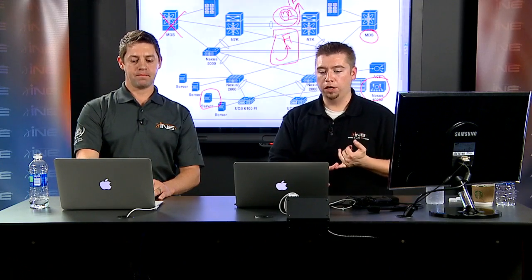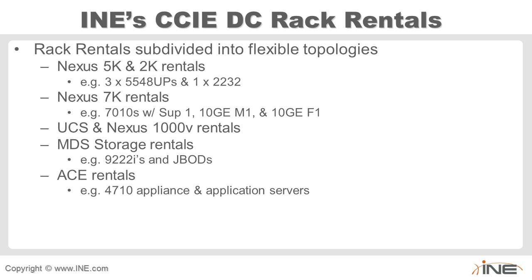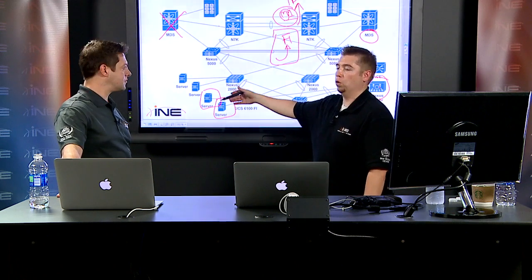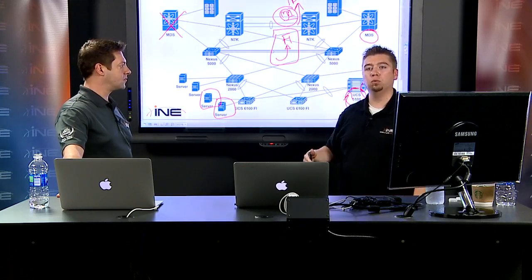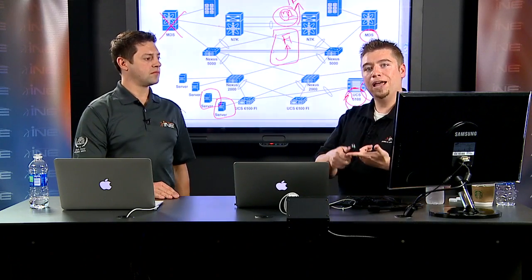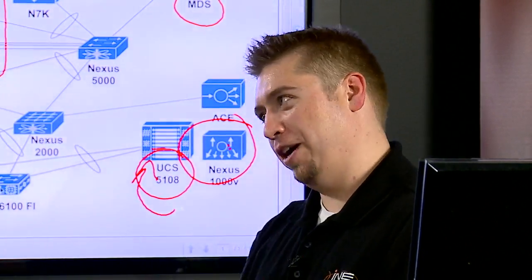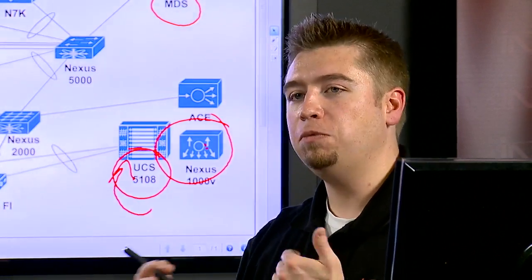Continuing with rack rentals: we have Nexus 2K, 5K, 7K, UCS chassis (meaning Nexus 1000v will be on there), storage platforms including storage switches and storage arrays, and application switching with ACE. For ACE, you need actual servers to test the end result, whether on a UCS chassis or standalone physical or virtual machines. For example, with Nexus TrustSec, you can't really understand it without figuring out how it integrates with the overall design — it's difficult to test RADIUS authentication without a RADIUS server.